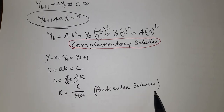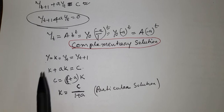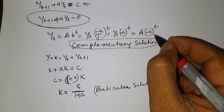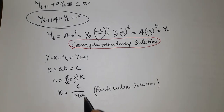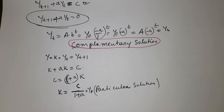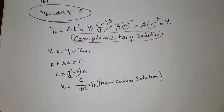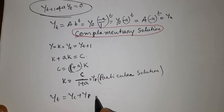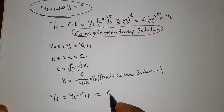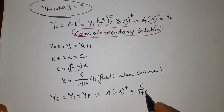Writing the complementary solution as y_c and the particular solution as y_p, the complete solution of this difference equation is y_t = y_c + y_p = A · (-a)^t + c / (1 + a).